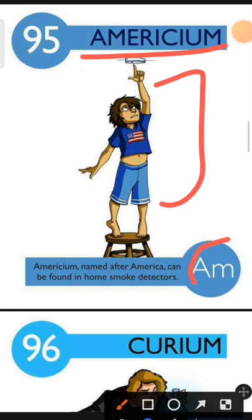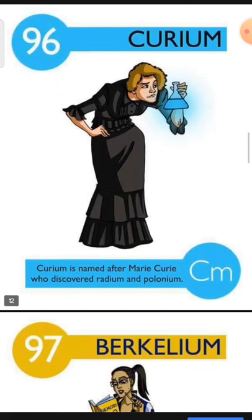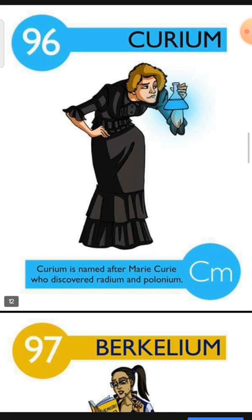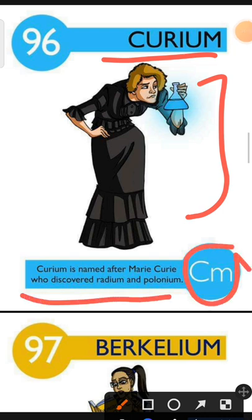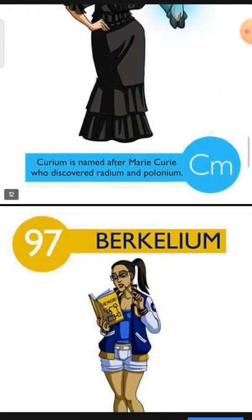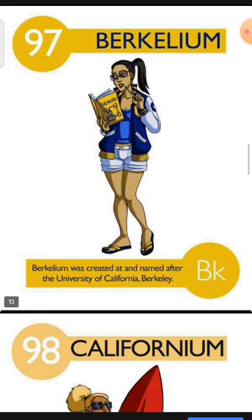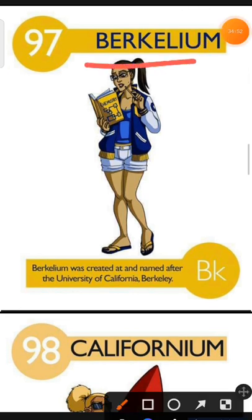Element number 96 is Curium. The characteristic of Curium is: Curium is named after Marie Curie who discovered Radium and Polonium. Element number 97 is Berkelium. The characteristic of Berkelium is: Berkelium was created and named after the University of California, Berkeley.